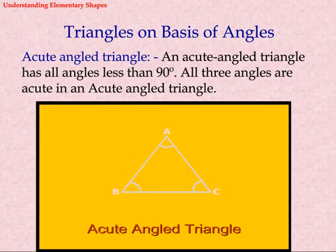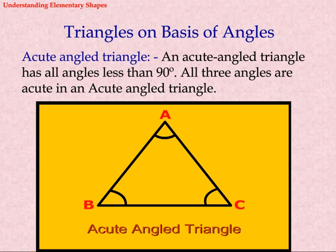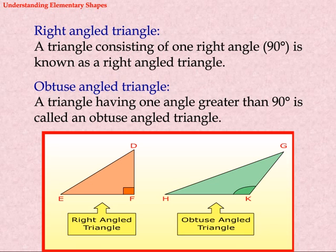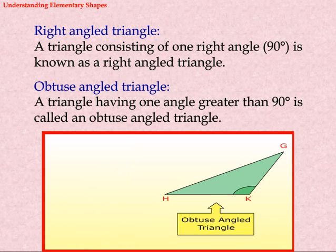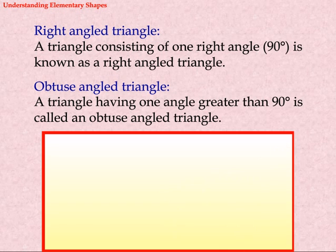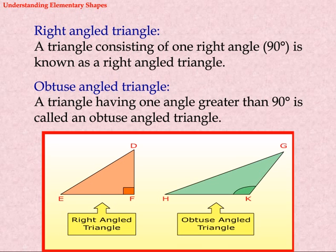Triangles on the basis of angles. Acute angled triangle: An acute angled triangle has all angles less than 90 degrees. All three angles are acute. Right angled triangle: A triangle consisting of one right angle (90 degrees) is known as a right angled triangle. Obtuse angled triangle: A triangle having one angle greater than 90 degrees is called an obtuse angled triangle.